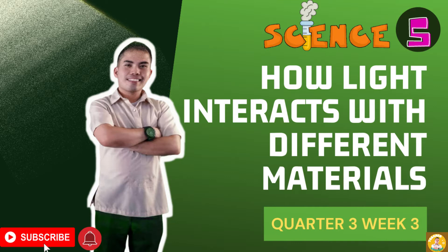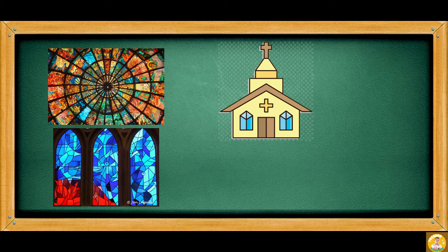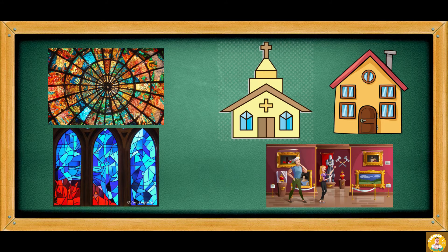This time, you will learn how light interacts with different materials. Have you seen an artwork on stained glass? Stained glass are seen in churches, art museums, and even in some houses. The designs of stained glasses are achieved through the use of glasses with various colors.